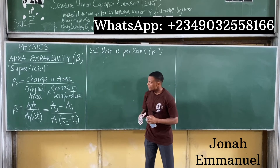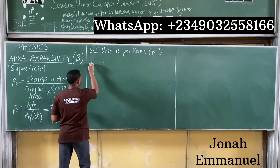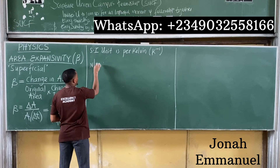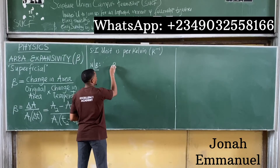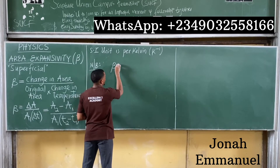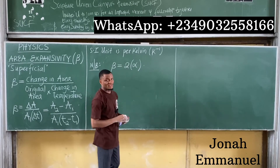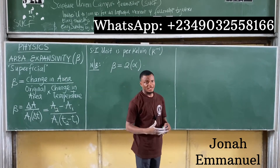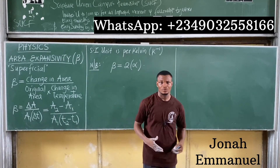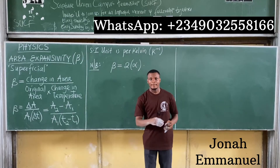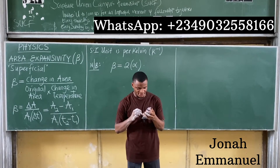Another important thing to note is the relationship between area expansivity and linear expansivity. Area expansivity, or superficial expansivity, is twice the value of linear expansivity. So if you are given the value of linear expansivity, you can simply get the area expansivity by multiplying that value by two: beta equals 2 × alpha.